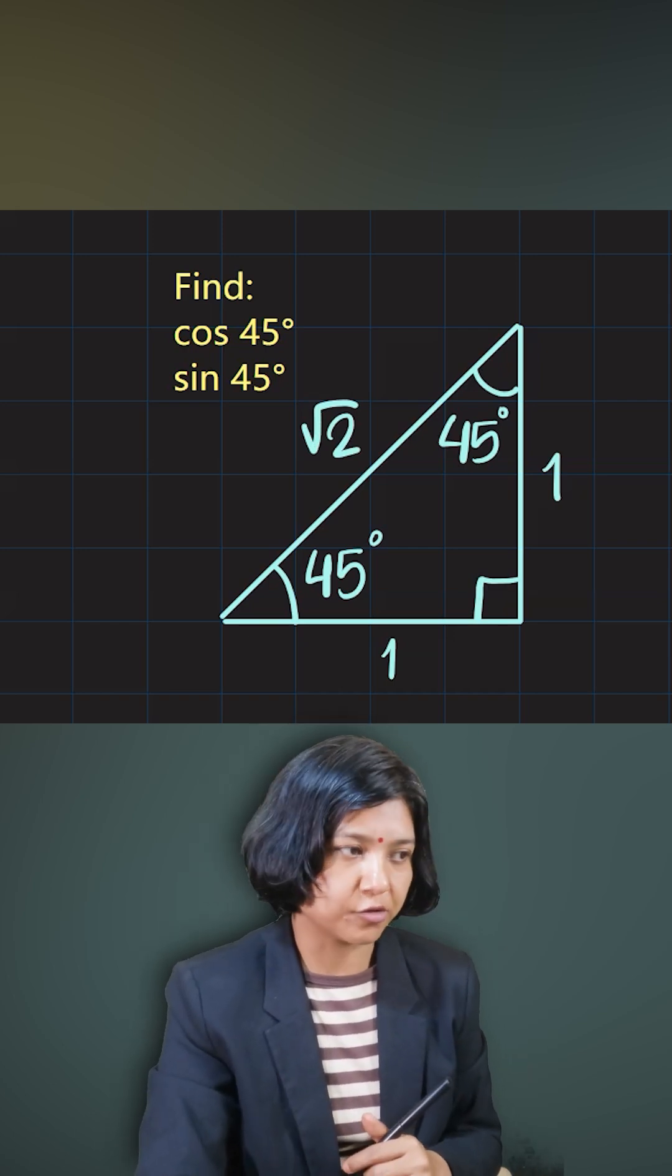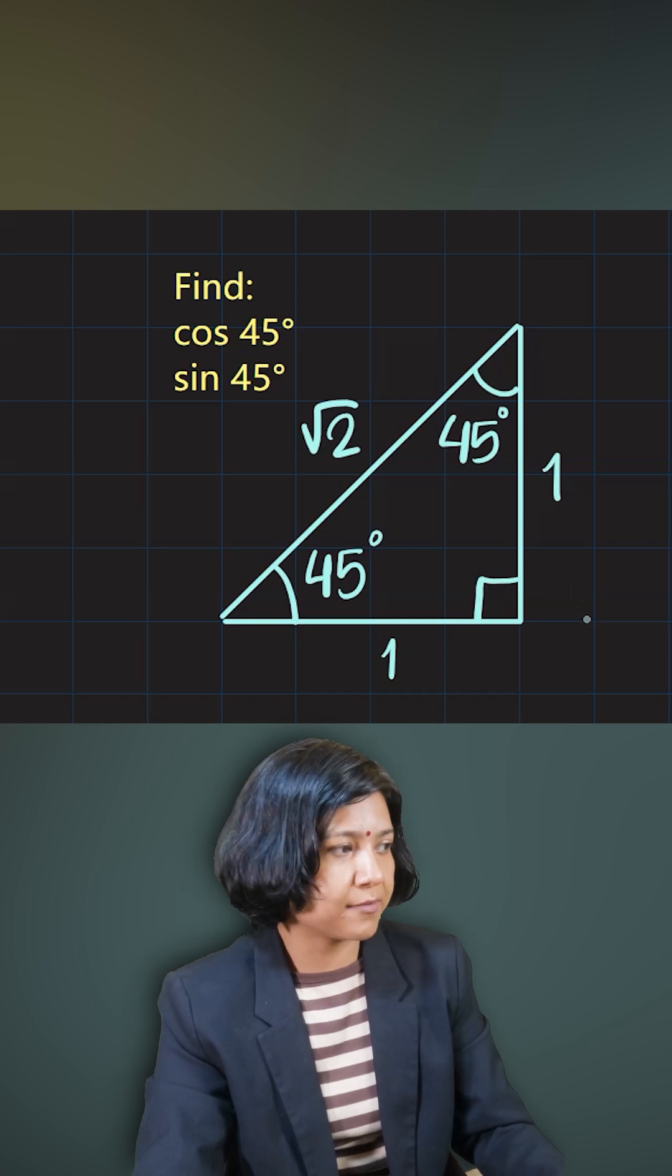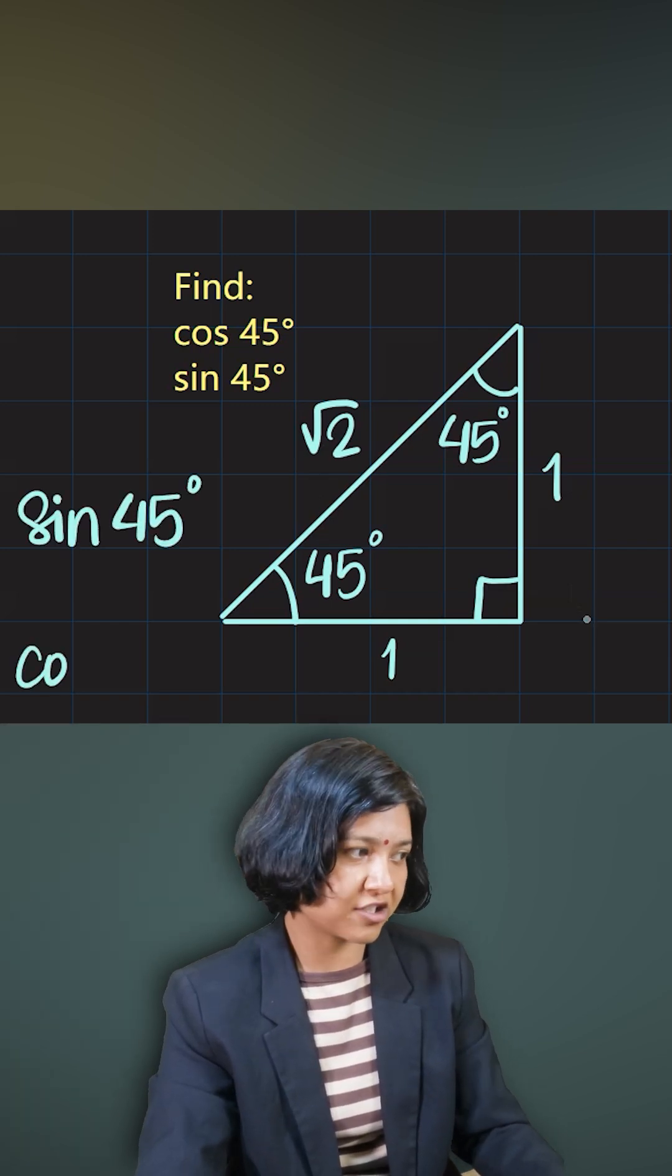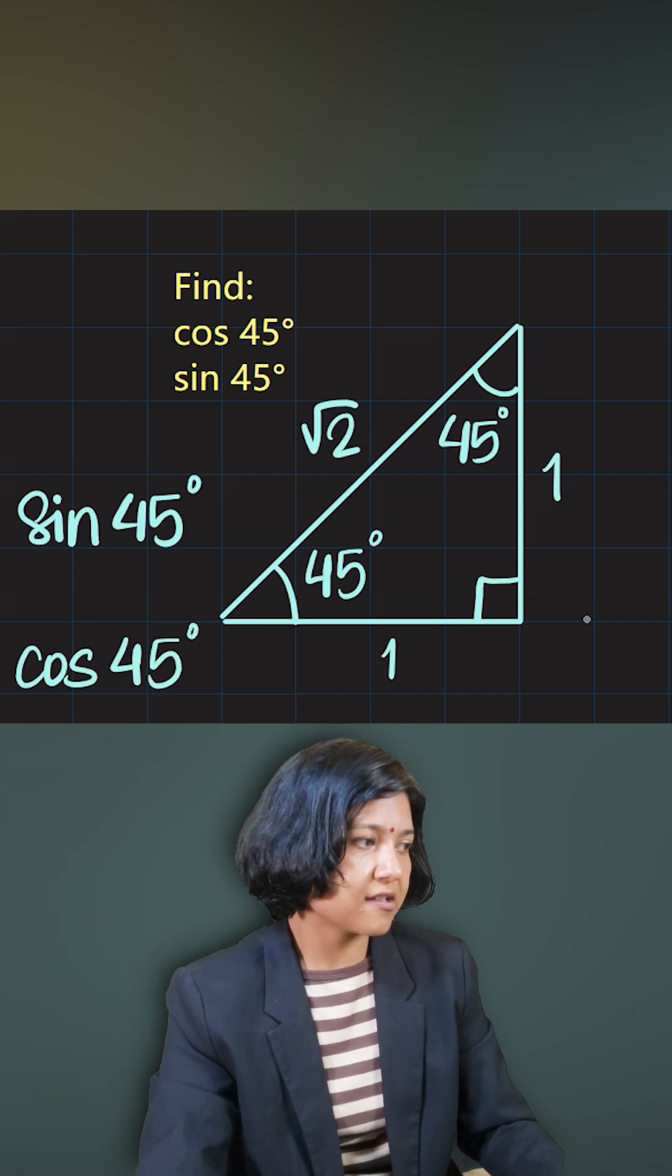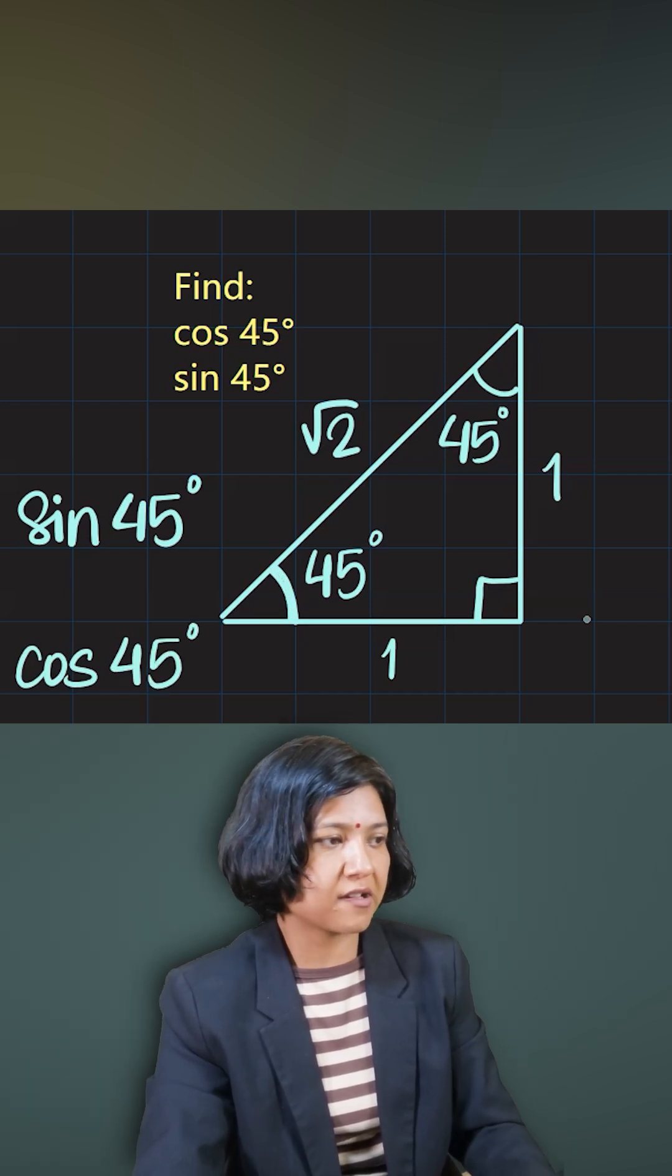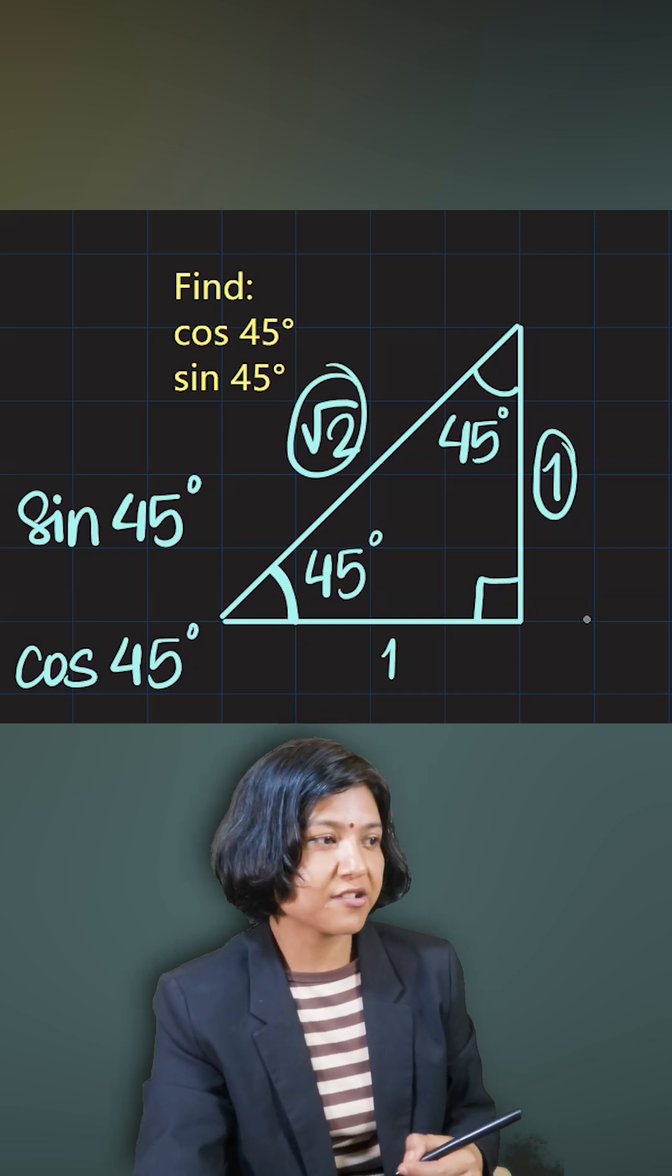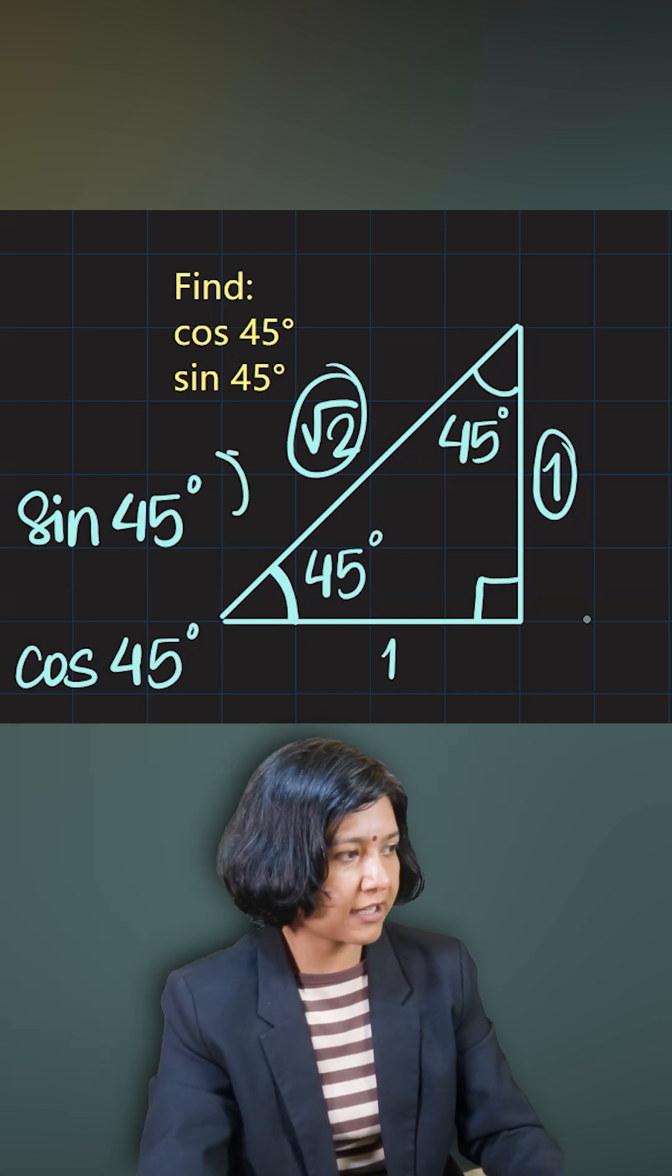Now it's very easy to remember that no matter you're finding the sine value or the cos value, you are actually doing the same thing. What you're doing is for sine 45, it's opposite perpendicular upon hypotenuse, or opposite upon hypotenuse, which is one upon root two. So we get the answer one upon root two for sine.